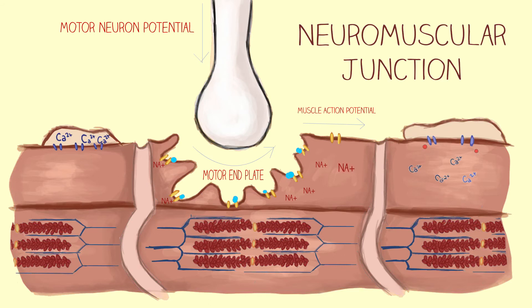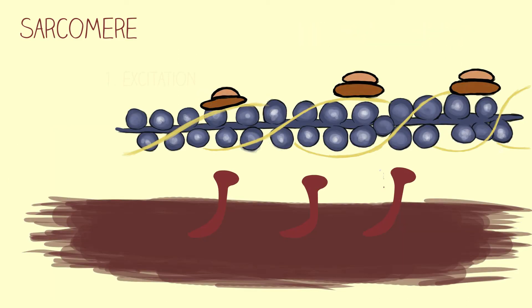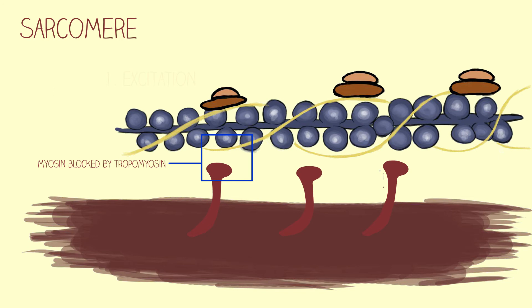What comes next are the steps of muscle contraction. The steps of muscle contraction occur within muscle fibers, specifically within the sarcomeres of myofibrils. Remember that at rest, myosin heads were separated from actin filaments. This is because the myosin binding sites on actin were blocked by tropomyosin proteins held in place by troponins.